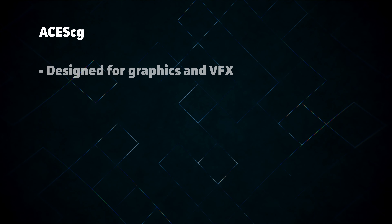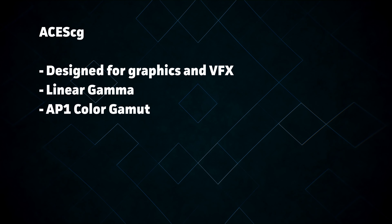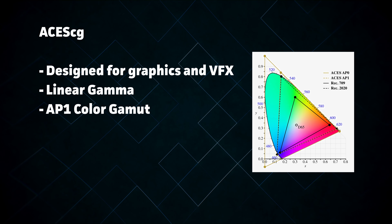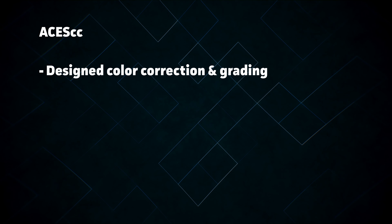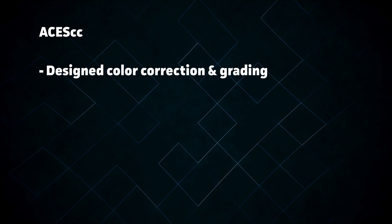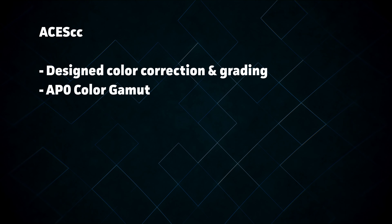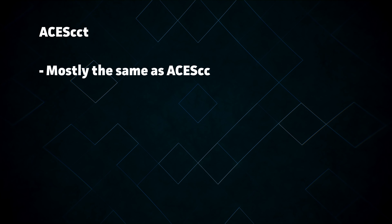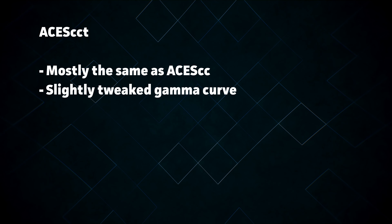While ACES 2065 is capable of storing any image, it isn't necessarily the most convenient timeline format for some portions of the workflow. To address this, ACES also defines formats called ACES-CG, ACES-CC, and ACES-CCT. ACES-CG is designed for creating graphics and visual effects — it uses a linear scene-referred gamma like ACES 2065, but with a smaller color gamut called AP-1, which excludes extremely saturated colors a graphics artist isn't likely to use. ACES-CC is meant to make color correction more familiar for experienced colorists by retaining the full AP-0 gamut but using a more familiar log-gamma curve instead of a linear one. ACES-CCT is the same as ACES-CC but with a slightly tweaked curve to make the shadows easier to work with — unless you have a specific reason to use ACES-CC, ACES-CCT is usually the better option.